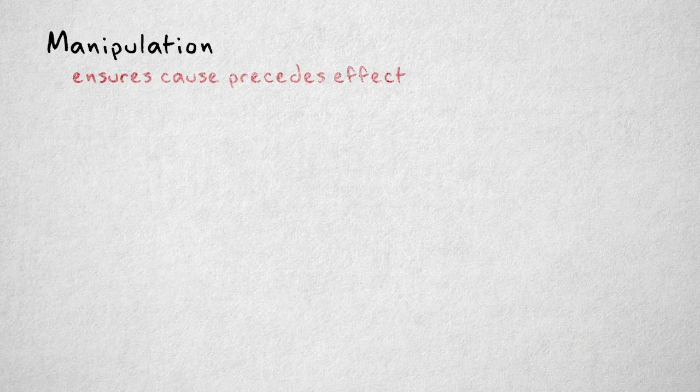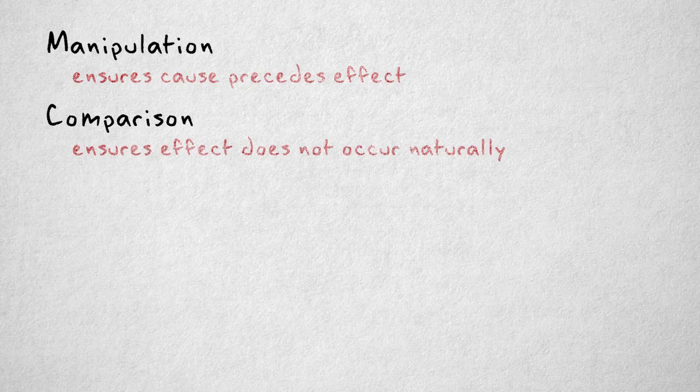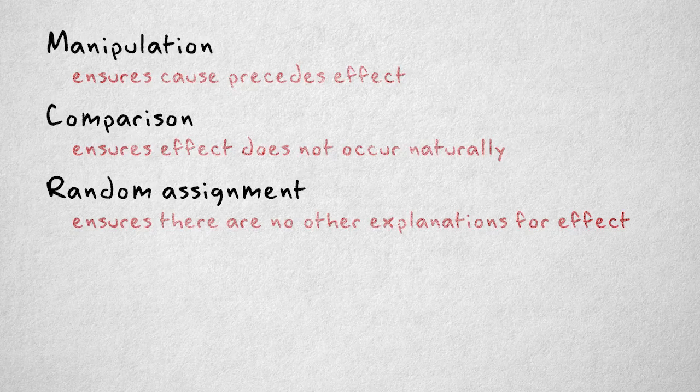So to summarize, manipulation ensures the cause precedes the effect. Comparison to a control group ensures the effect did not occur naturally. And random assignment ensures that there are no other systematic differences between the groups that could explain the effect.